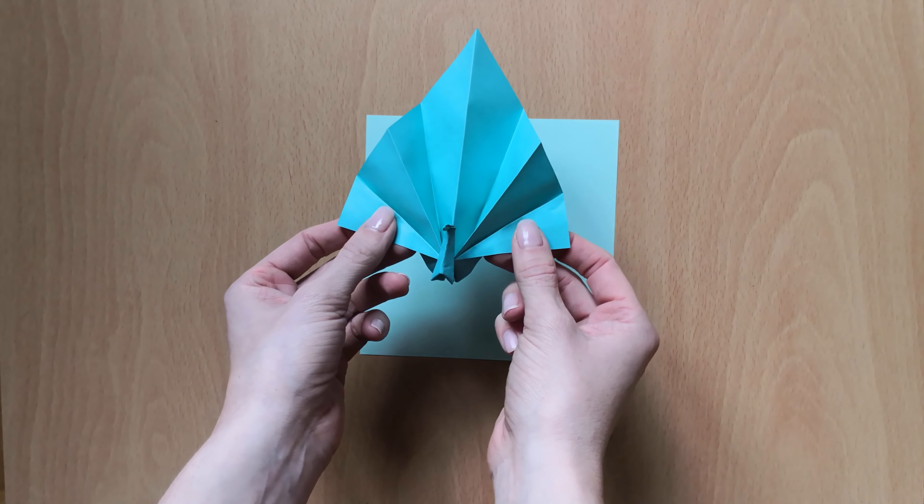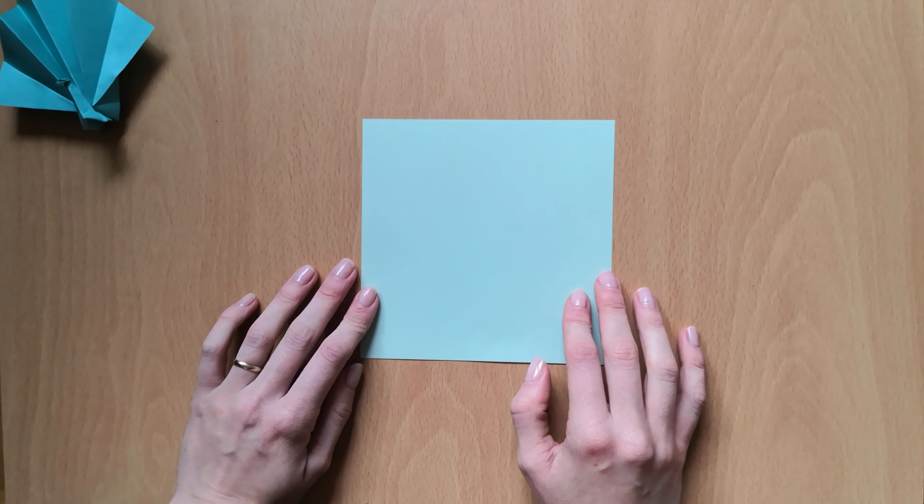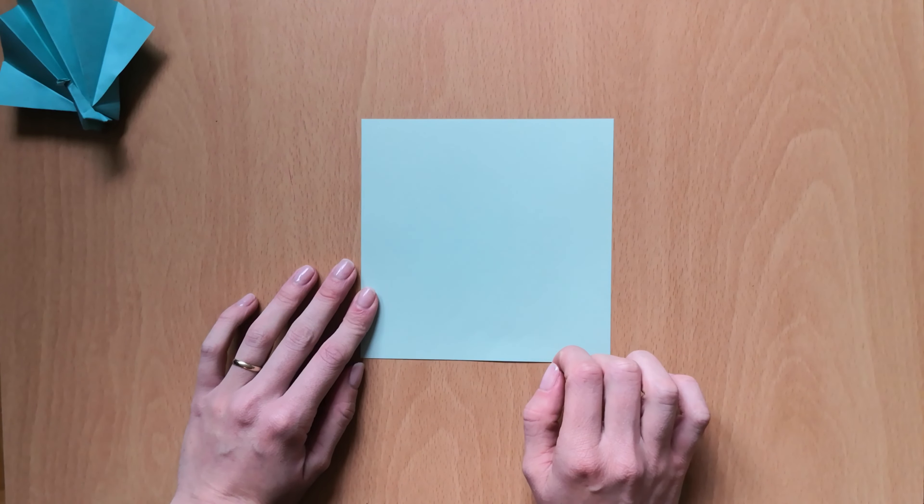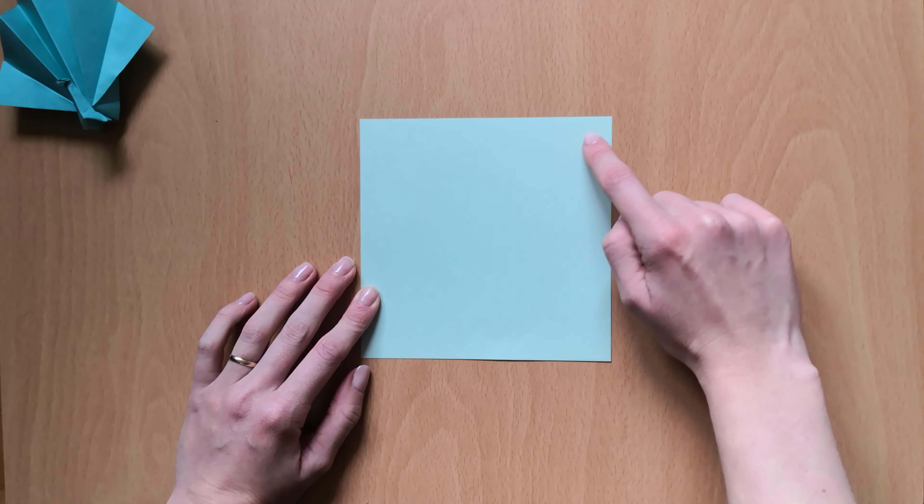Let's make origami peacock together. All you're gonna need is a piece of square paper. I'm using 15 by 15 centimeters and we'll start by folding our paper in half on a diagonal.